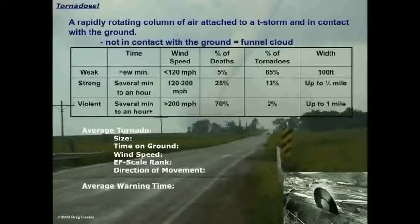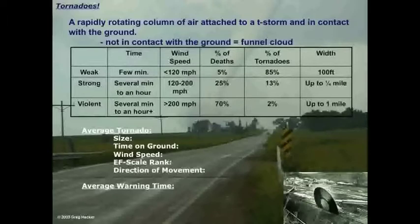Let's begin with the weak category. Weak tornadoes, which are your EF0, EF1, possibly even EF2, typically don't last very long — maybe up to 10 minutes. They generally have wind speeds less than 120 miles an hour, and because of those slower wind speeds, they're responsible for only 5% of all tornado fatalities. However, 85% of all tornadoes are of this weak variety. A typical weak tornado may only have a width of about 100 feet — a very focused path of destruction.